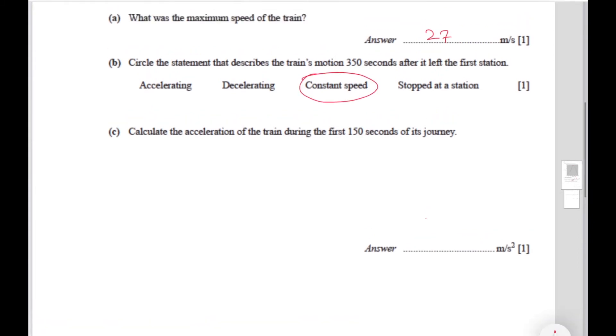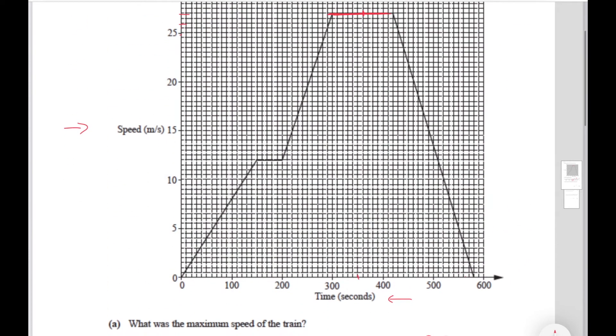The next part says calculate the acceleration of the train during the first 150 seconds of its journey. So the first 150 seconds means 10, 20, 30, 40, 50, it is going to be here. This is the point that they are talking about, and at the y-axis this is the point. That means this is 12 and this is 150.